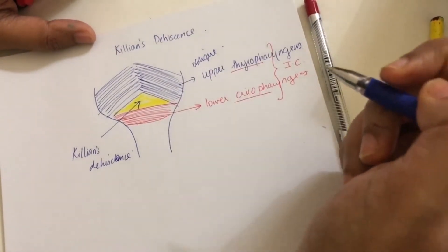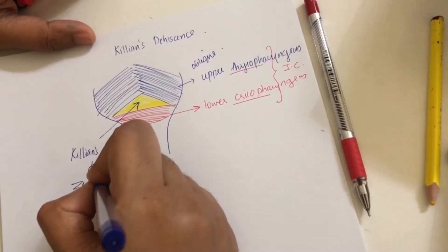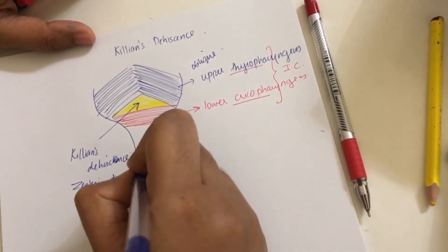This is a potential site for the development of diverticulum. As you all know, which diverticulum develops through this defect? It is Zanker's diverticulum.